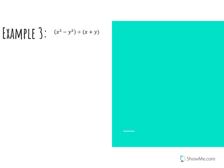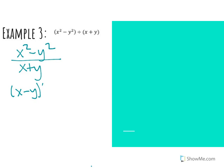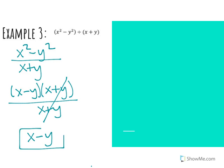Our next example is X squared minus Y squared, divided by X plus Y. I'll rewrite that so I know what's in my numerator and denominator. In my numerator I have two terms. I'm going to use difference of squares: X times X gives me X squared, and Y times Y gives me Y squared. I'll write the numerator as (X + Y)(X − Y). I cannot simplify the denominator because there's no GCF and it's not a difference — there's no subtraction sign. Dividing out the common factor of X plus Y, I'm left with X minus Y as my final solution.